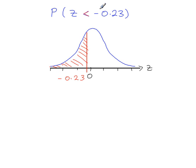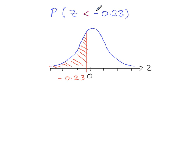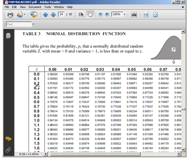When you go to the tables, you'll notice there are no negative z values — they're all positive. Since we have a negative z value of minus 0.23, we ignore the minus sign and look up 0.23. The 0.2 row and 3 column meet at 0.59095.